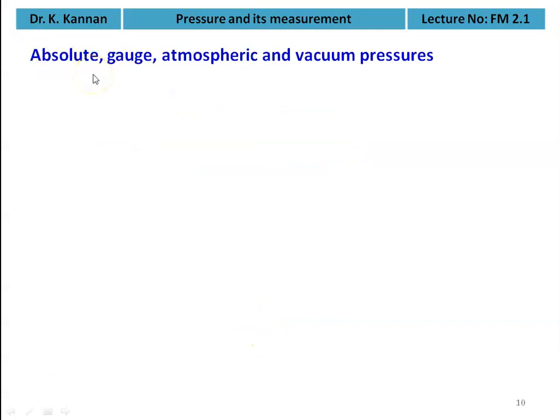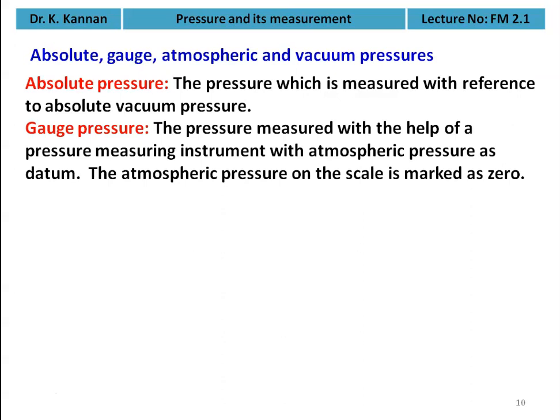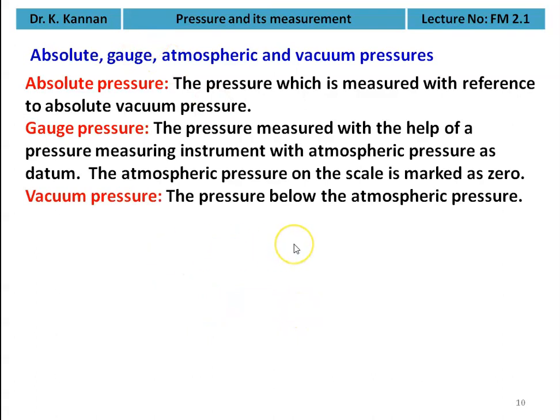We define the different types of pressure: absolute pressure, gauge pressure, atmospheric pressure, and vacuum pressure. Absolute pressure is measured with reference to absolute vacuum. Gauge pressure is measured with respect to atmospheric pressure using a pressure measuring instrument, with atmospheric pressure as the datum (marked as zero on the scale). Vacuum pressure is the pressure below atmospheric pressure — also called negative pressure.